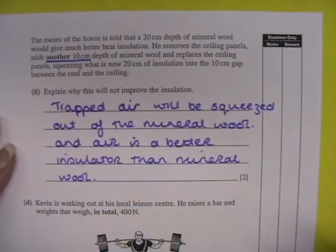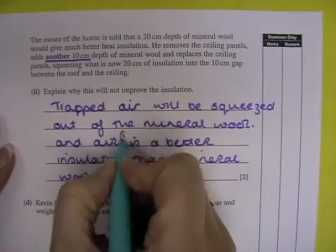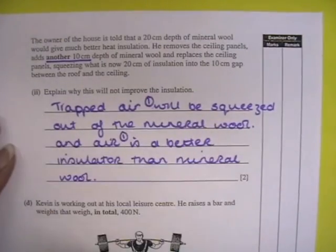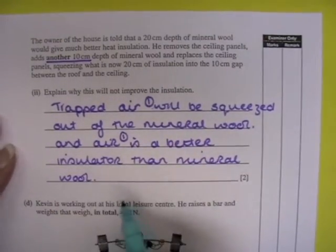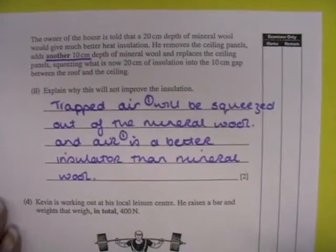So trapped air will be squeezed out of the mineral wool and air is a better insulator than mineral wool. Those are your two main points, the squeezing out of the trapped air and the fact that you are removing the best insulator when you squeeze it out.